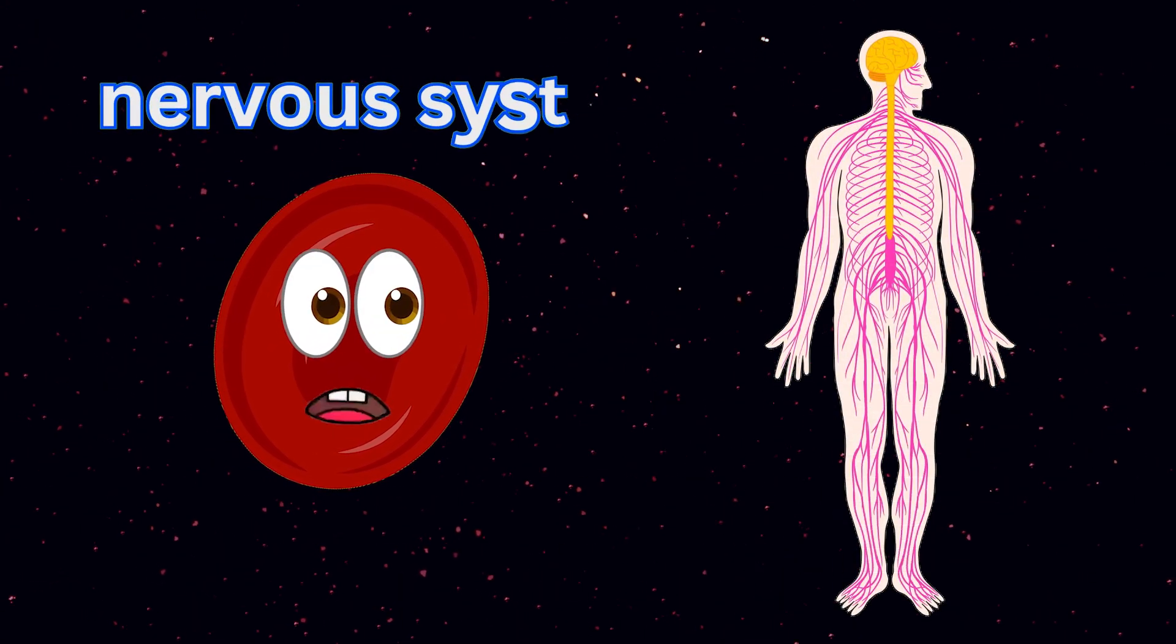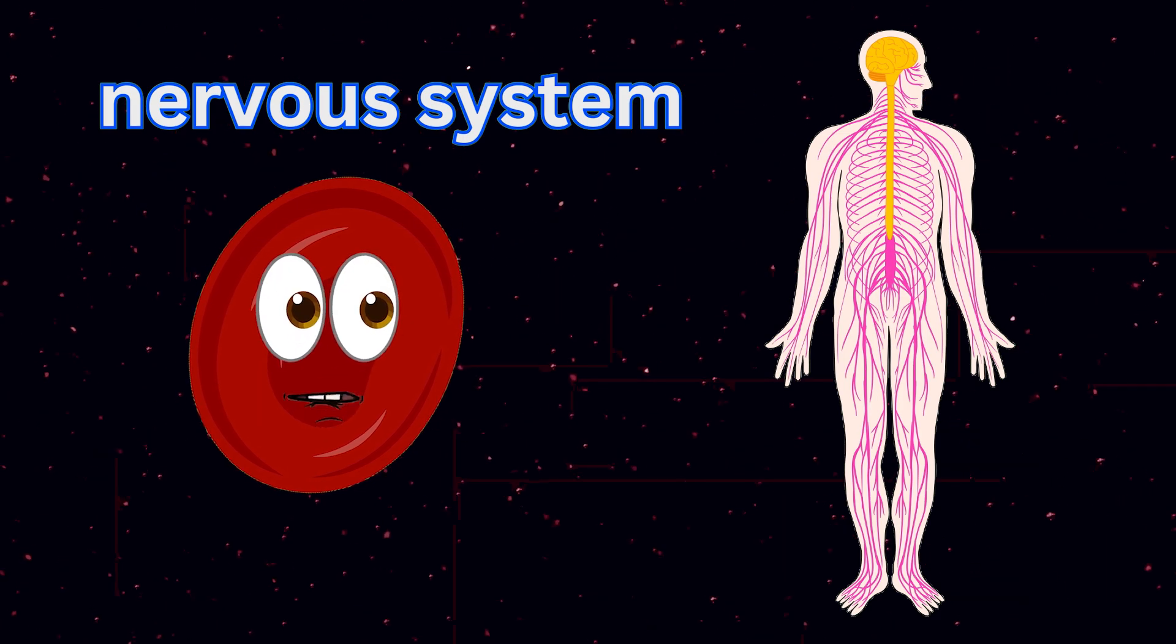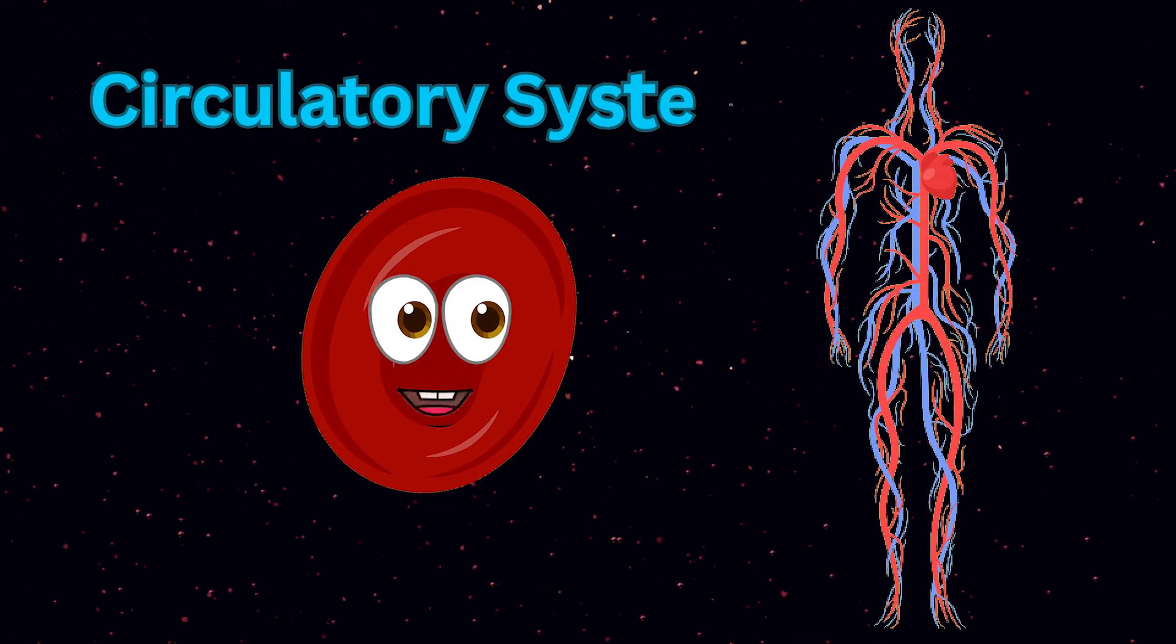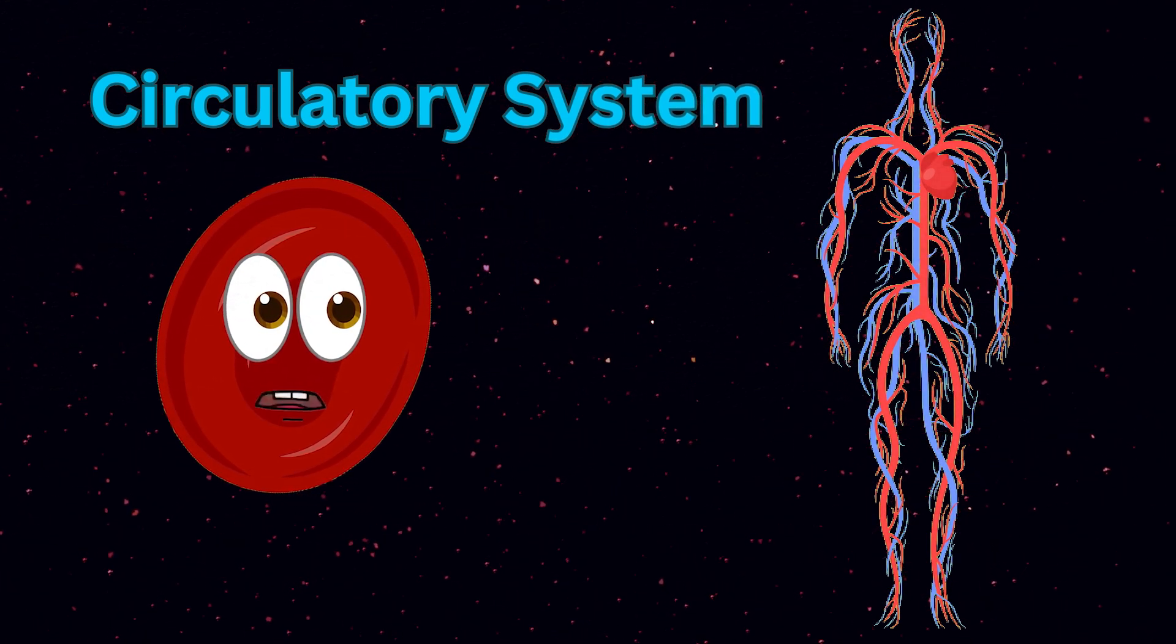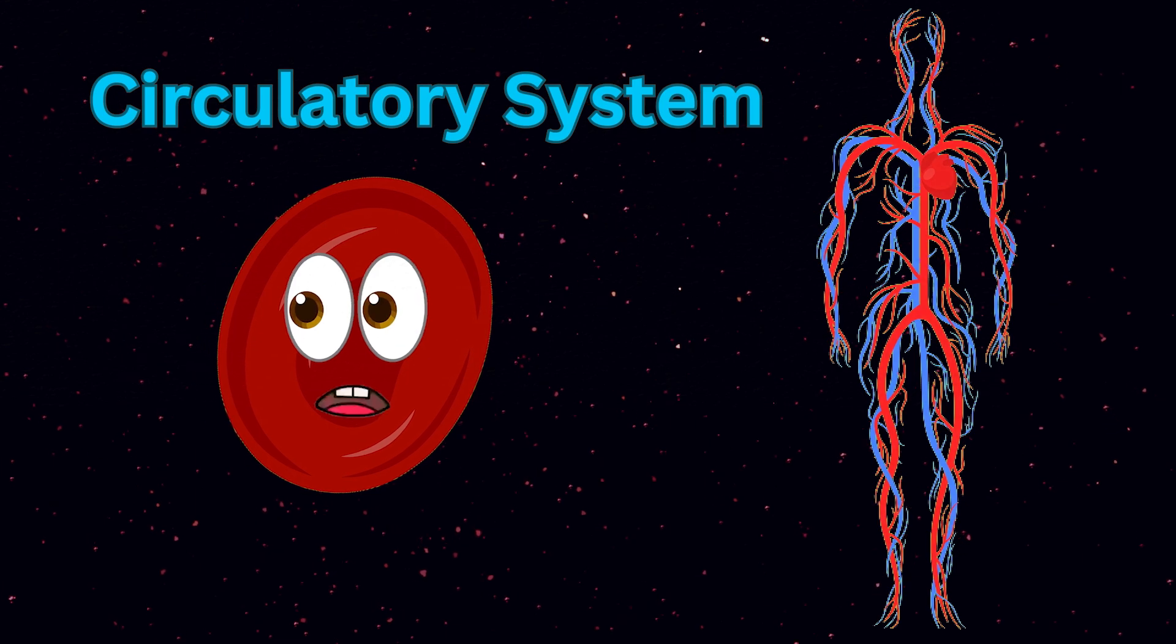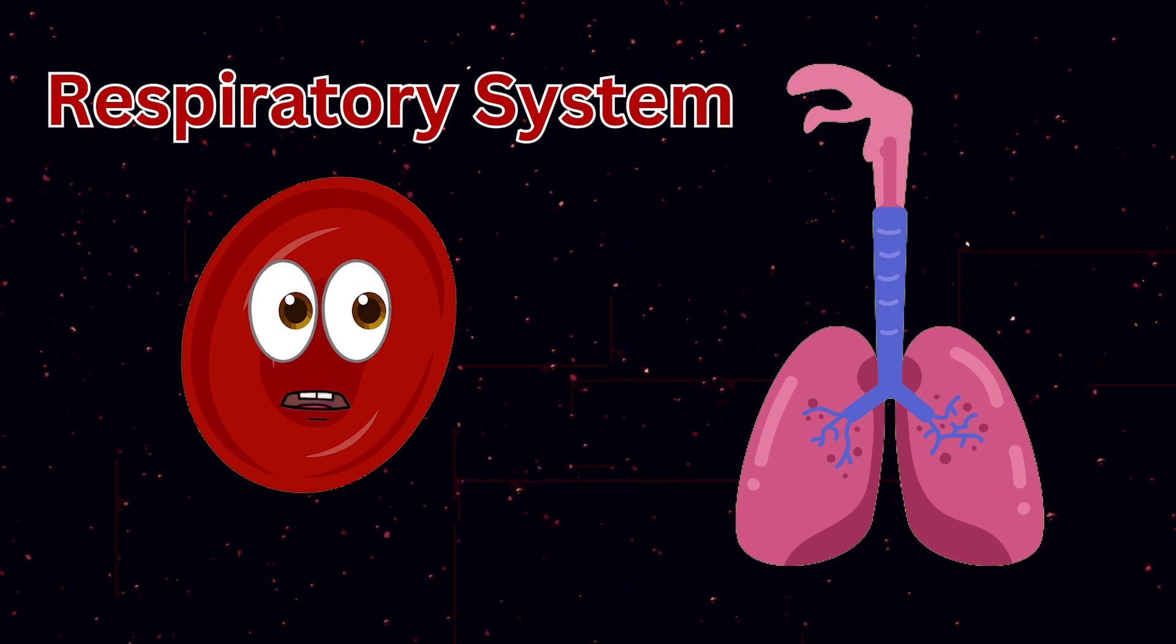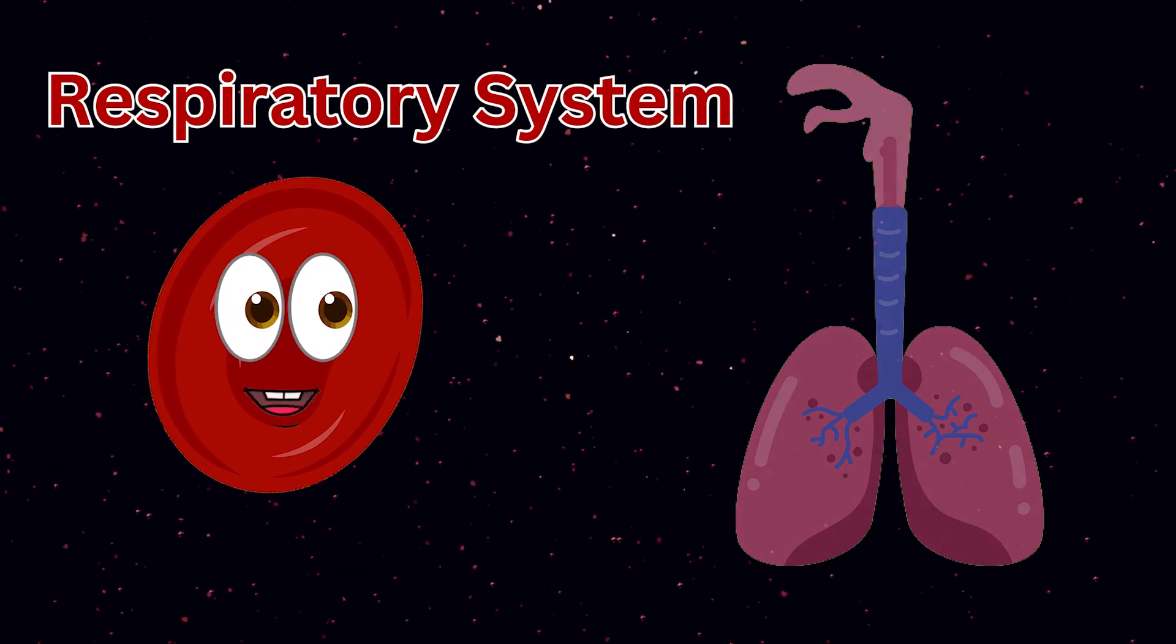There's the nervous system - it has an important job too. It sends signals into the brain for all that you do. The circulatory system is where all your blood flows. It carries oxygen and nutrients to where it should go. The respiratory system is what you use to breathe. It carries oxygen to all the cells that your body needs.